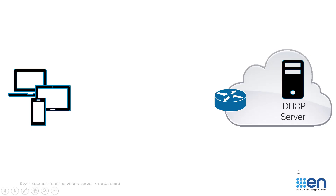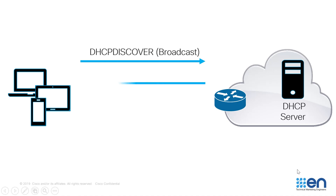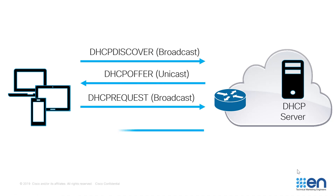A common DHCP flow would look something like the following. If your DHCP server is located on a different subnet than your endpoints, which is usually the case, you would need to provide an IP helper address in order to unicast the broadcast request to the DHCP server. This is due to the nature of Layer 3 devices, which do not forward broadcasts.